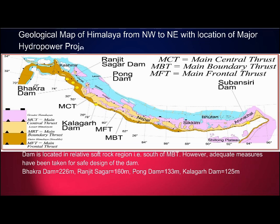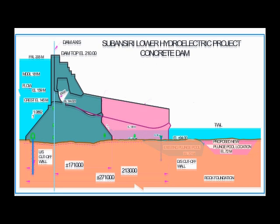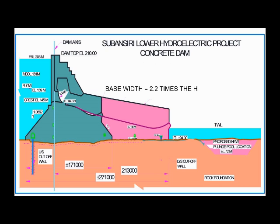However, adequate measures have been taken for the safe design of the dam. Accordingly, the base width of the dam has been increased to 271 meters from 171 meters — an increase of 100 meters — as recommended by the Dam Design Review Panel (DDRP). The base width is now 2.2 times the height of the dam, whereas earlier it was 1.35 times. Normally, the base width of a concrete gravity dam is kept equal to the height of the dam.